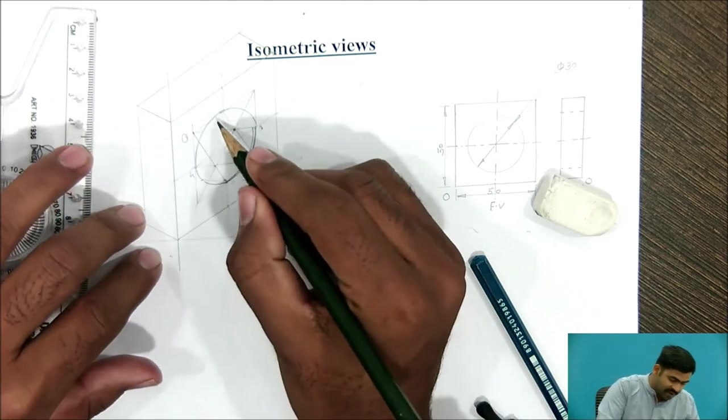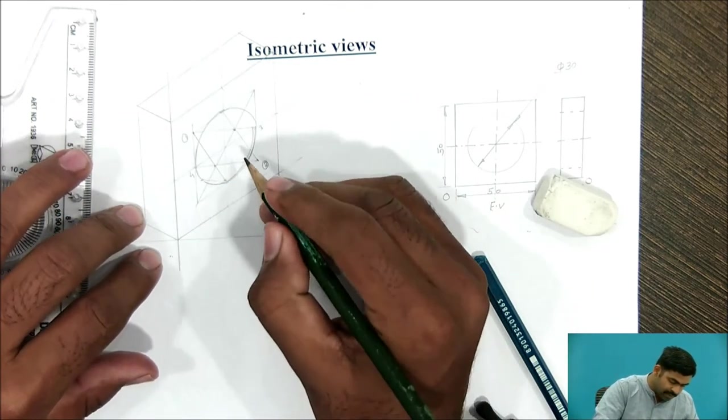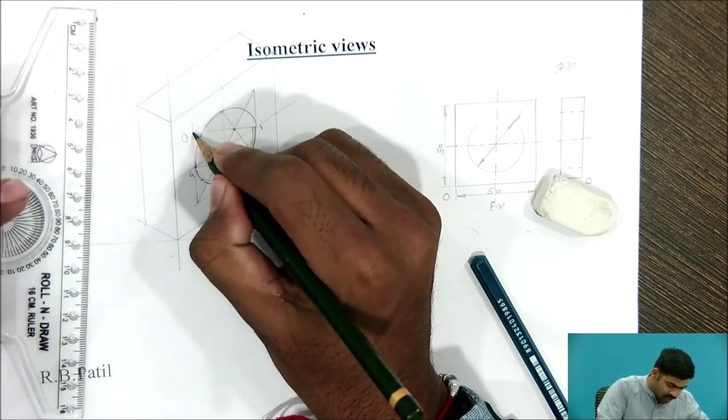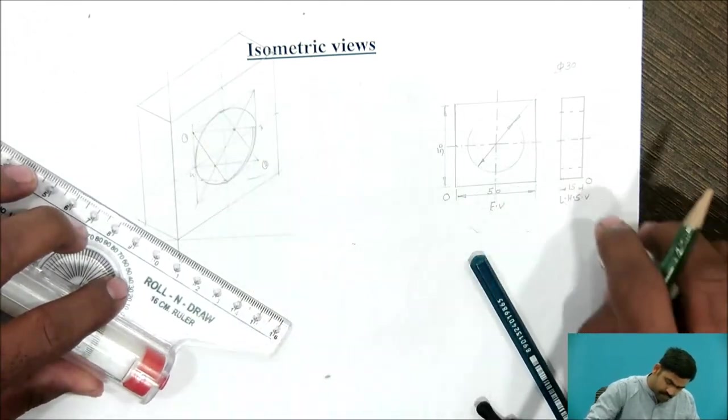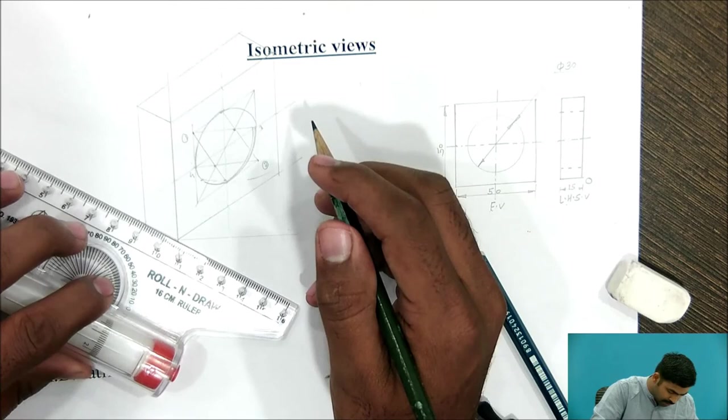Now, similar entity you have to draw on back plane. For that purpose, just consider this centre, you have to carry out 15 mm mark. Then, draw a line back side. Draw a line parallel to this axis.